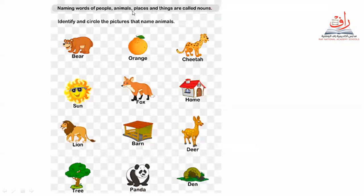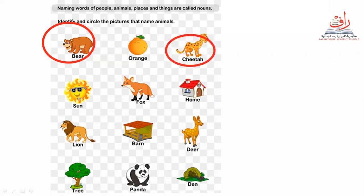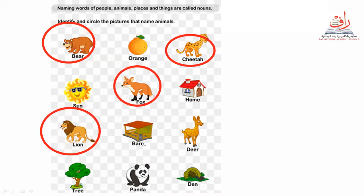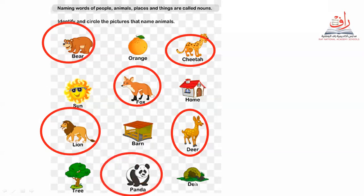Bear — yes, it's an animal. Orange — no, that's a thing, a fruit. Cheetah — yes, animal. Sun — no, things. Fox — yes, animal. Home — no, things. Lion — animal. Barn — no, other things. Deer — things or animals? Panda — animal. Then it's things. We can use nouns now with animals. Good job, let's go next.